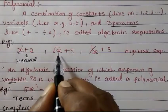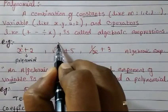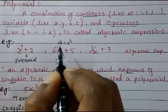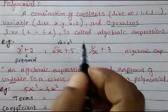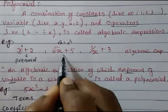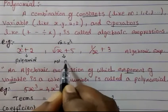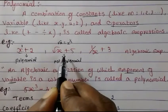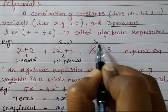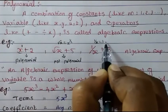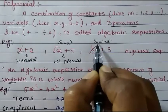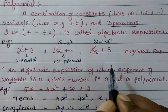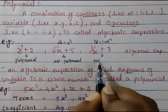Now let's check root x. Root x can be written as x^(1/2). Since 1/2 is not a whole number, this is not a polynomial. Next, 1/x can be written as x^(-1). Since -1 is not a whole number, therefore this is also not a polynomial.